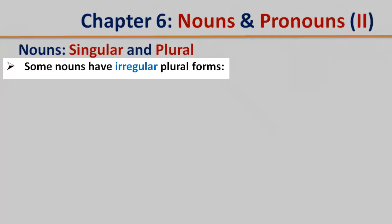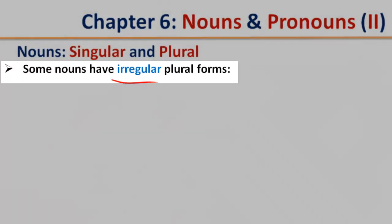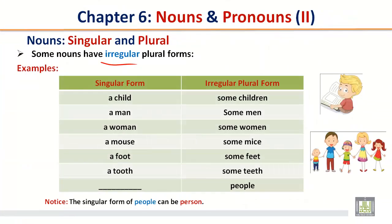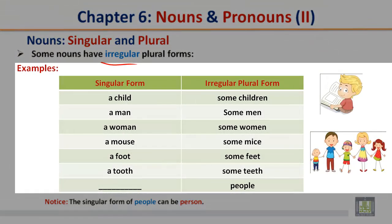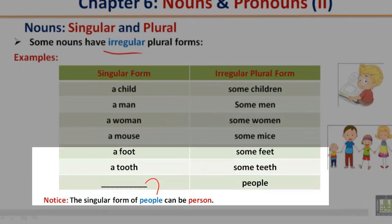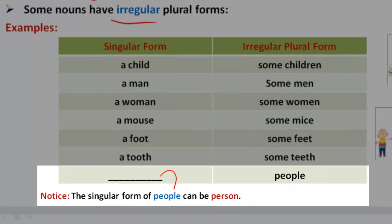Some nouns have irregular plural forms. Examples: a child becomes some children, a man becomes some men, a woman becomes some women, a mouse becomes some mice, a foot becomes some feet, a tooth becomes some teeth. The singular form of people can be person, and the irregular plural form is people.